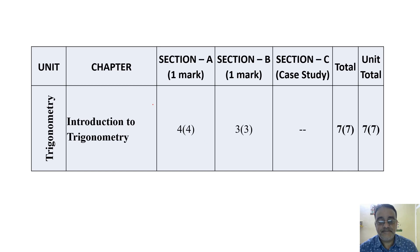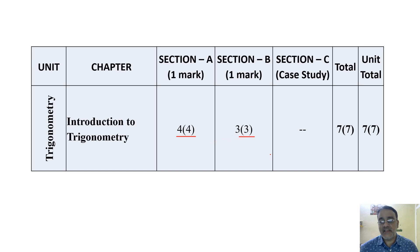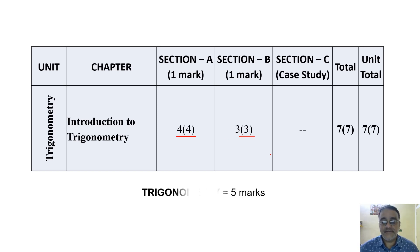For Introduction to Trigonometry, Section A has four questions and Section B has three — seven questions and seven marks. The weightage of this chapter is five marks.